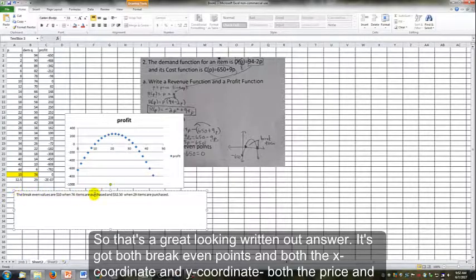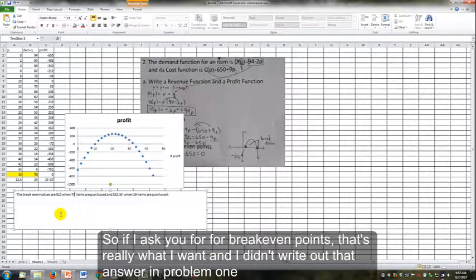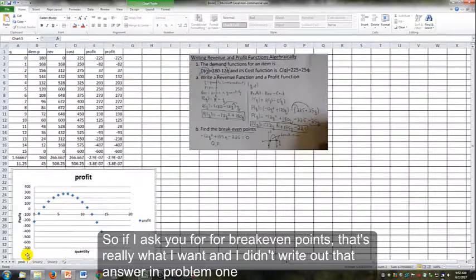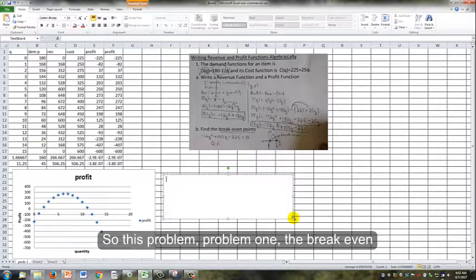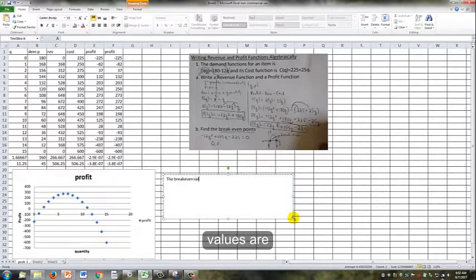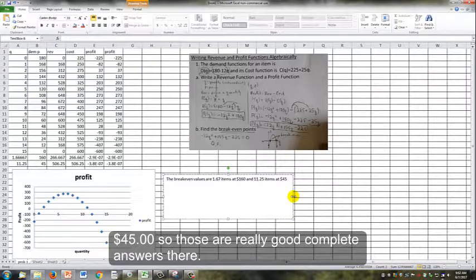That's a great-looking written-out answer. It's got both break-even points and both the x-coordinate and y-coordinate. Both the price and the quantity are listed. So if I ask you for break-even points, that's really what I want. I didn't write out that answer in problem one. I could do that if I wanted to show you here. For problem one, the break-even values are 1.67 items at $160 and 11.25 items at $45. Those are really good complete answers.